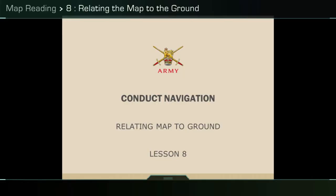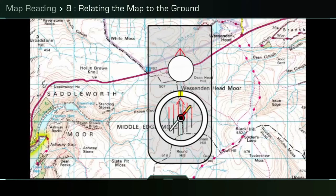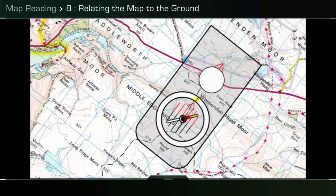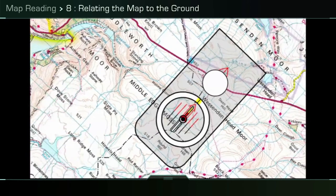Map reading, lesson 8: relating the map to the ground. As a soldier, it's essential that you can relate the map to the ground in order to identify your own location, the location of the enemy, or prominent features. To relate the map to the ground, you must first orientate your compass to the map, as previously shown in lesson seven. Once completed, everything in your field of vision should be reflected in the area of the map you've identified.